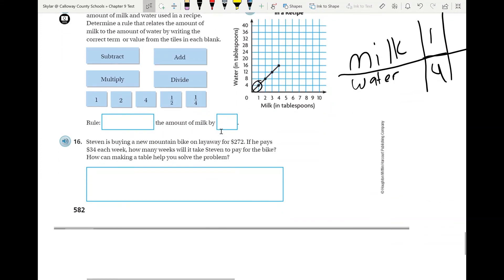And then finally, number 16. Steven is buying a new mountain bike on layaway for 272 dollars. If he pays 34 each week, how many weeks will it take Steven to pay for the bike? So what you need to do, you need to make a table for this one. So again, you've got week and you've got money. So every week he gets 34. So what would he have after two? You need to use this table to try and figure out how you could find how many weeks it's going to take to get 272.